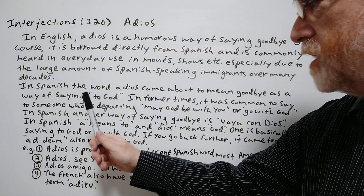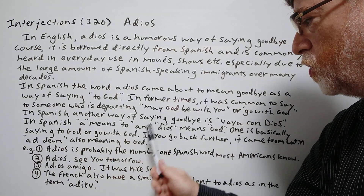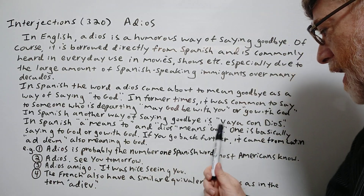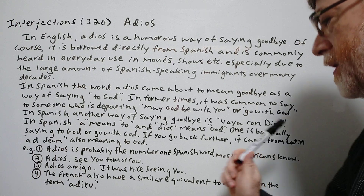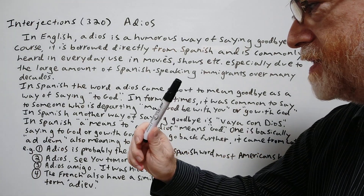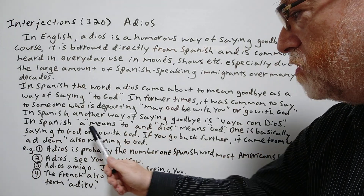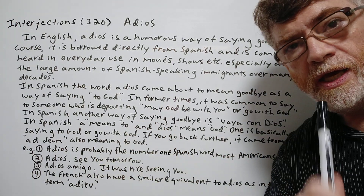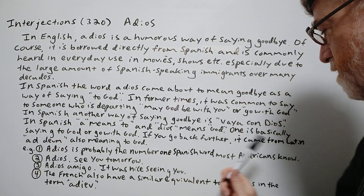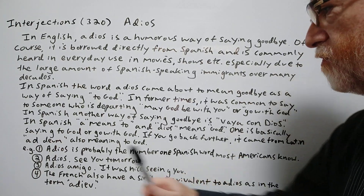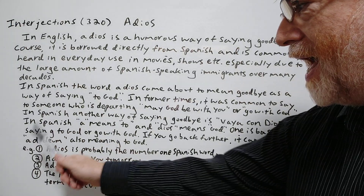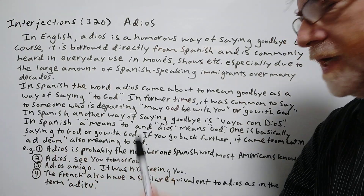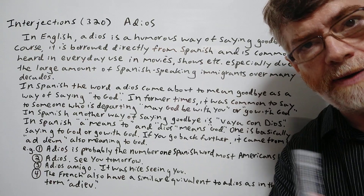In Spanish, 'a' means 'to' and 'Dios' means 'God,' so one is basically saying 'to God' or 'go with God.' If you go back further, it came from Latin 'ad Deum,' also meaning 'to God.'